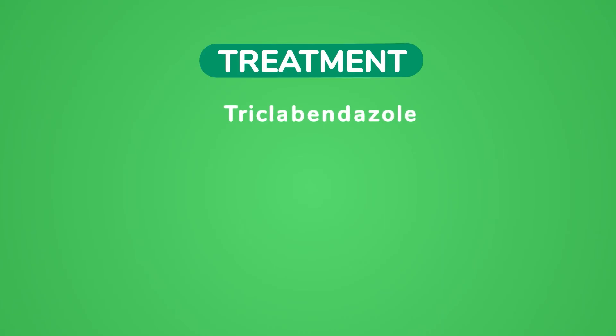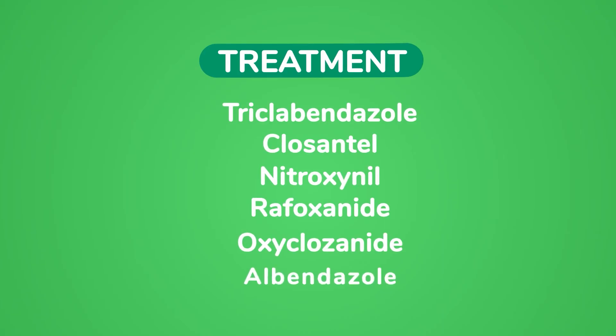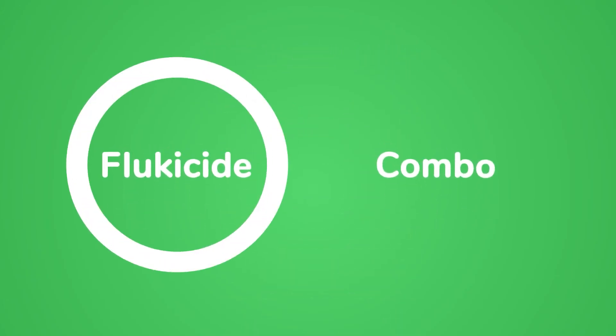There are a number of different active ingredients marketed as flukicides, some in combination with wormers to also control stomach worms. It is important to use anthelmintix sparingly and only when needed. So if the sheep need to be treated for liver fluke, then a flukicide only — not a combination product — should be used.